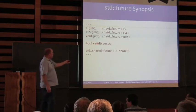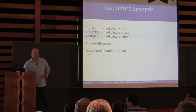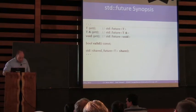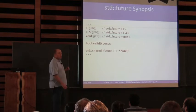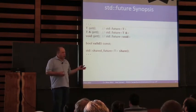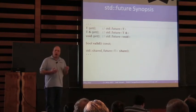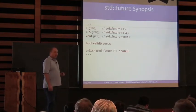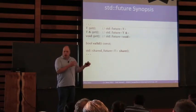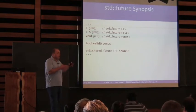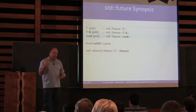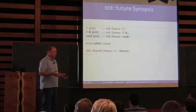What do you get when you call valid after calling get? The answer is false — it tells you there is no value to retrieve at that point. Share moves the contents out of the future into a shared future. The idea here is that you empty the future. Future has unique ownership of that asynchronous result, so once you've taken it out by calling get, or once you've called share to send it off to a shared future, it's gone.